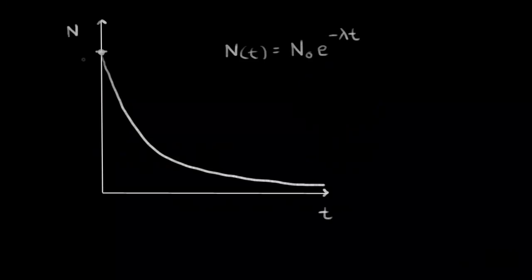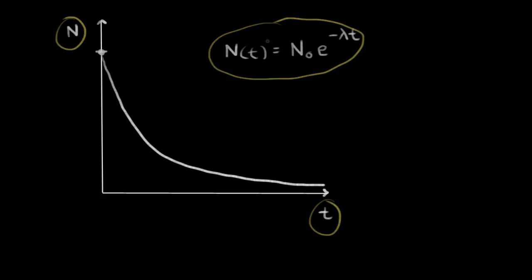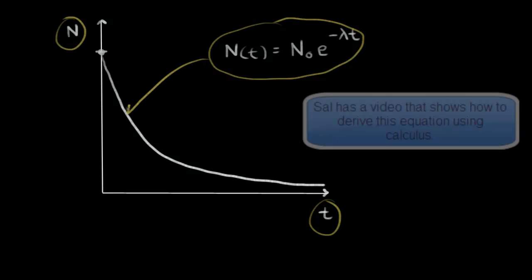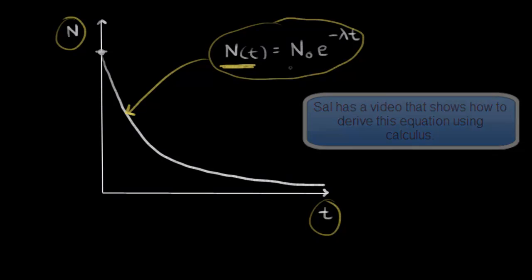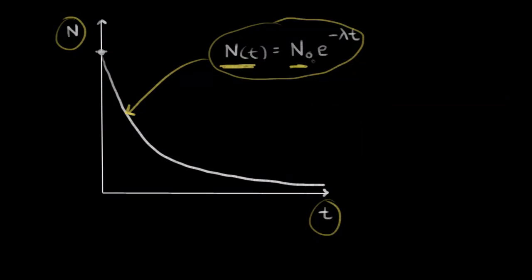Here we have a graph of exponential decay where n refers to the number of radioactive nuclei as a function of time. This equation describes our graph: the number of radioactive nuclei at any time t is equal to N-naught, the initial number of radioactive nuclei, times e to the negative lambda t. Lambda is equal to the decay constant.